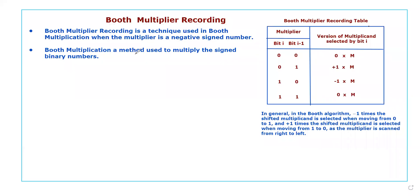Hello guys, today we are going to discuss about Booth multiplier recoding. Booth multiplier recoding is a technique used in Booth multiplication when the multiplier is a negative signed number, where Booth multiplication is a method used to multiply signed binary numbers.